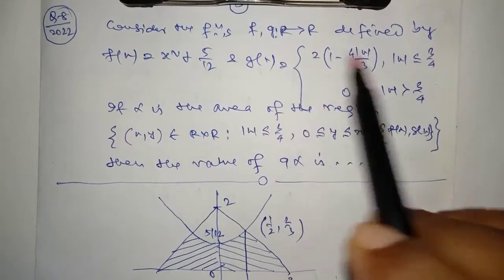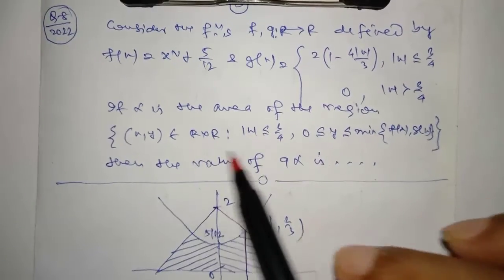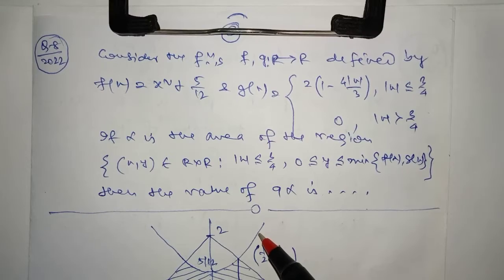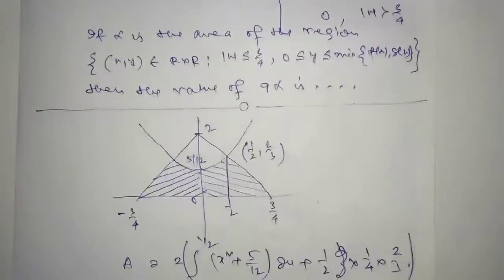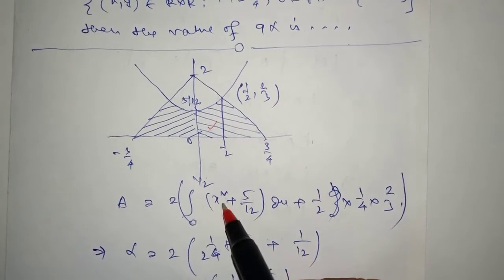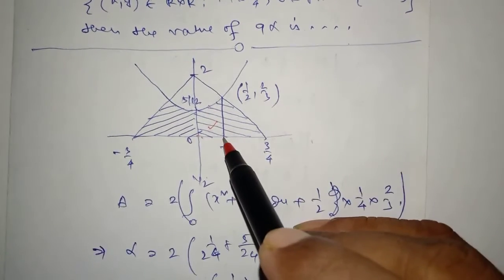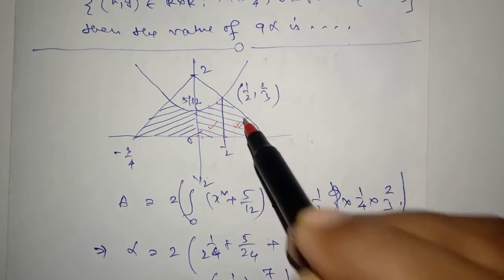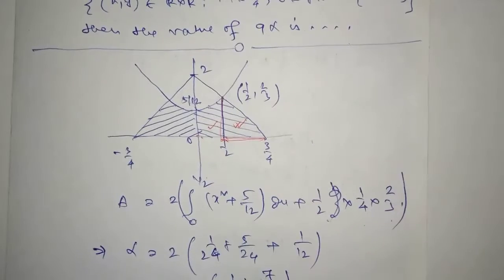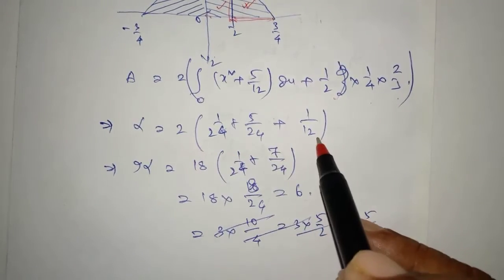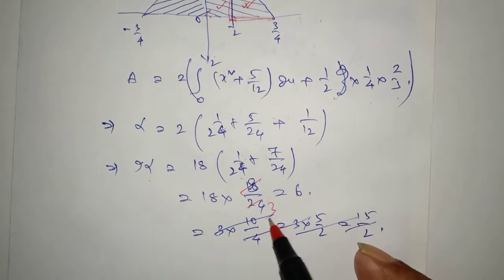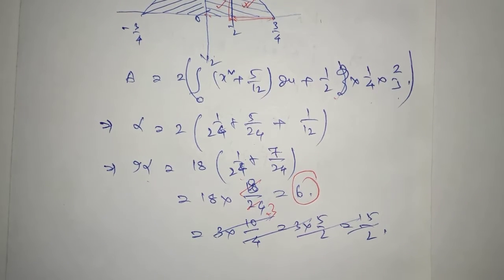Question 7: Consider functions f, g: ℝ→ℝ defined by f(x) = x² + 5/2 and g(x) is the given range function. If α is the area of the region, find the maximum value of 9α. From the graph, computing twice the integral from 0 to 1/2, plus the triangle area from 1/2 to 3/4 with base 1/4 and height 2/3. Simplifying α, then 9α = 18 × (1/24 + 7/24) = 6.